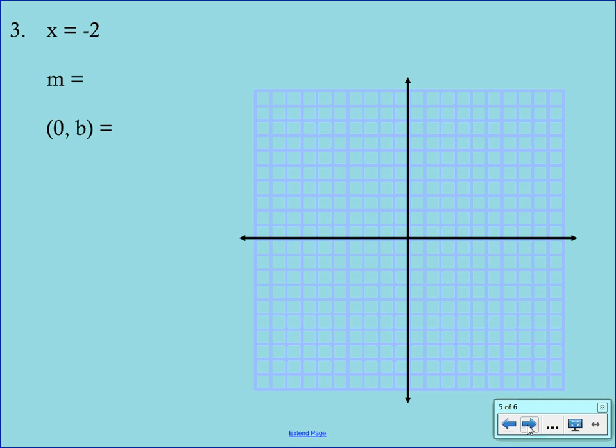Alright, our third example here. You may recognize it's not in slope-intercept form. Y is not by itself. This is actually a vertical line.